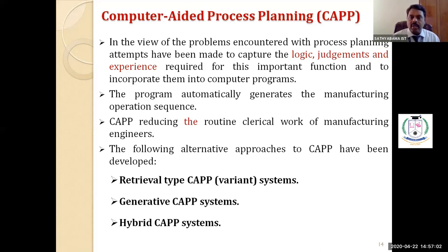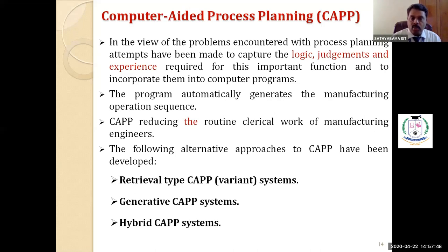Program logic, judgment, and experience are incorporated in the computer programs. The program automatically generates the manufacturing operation sequence — in the earlier case the sequence was derived manually, but now it is generated automatically, meaning the route sheet for a particular part or product is generated automatically, avoiding human errors or dimensional errors. CAPP reduces the routine clerical work of manufacturing engineers since the computer program generates the manufacturing operation sequence.